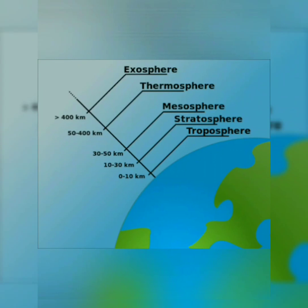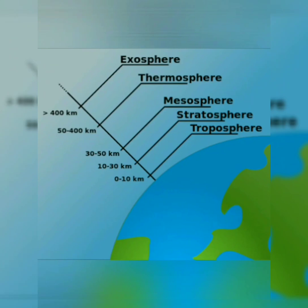Now, the atmospheric gases: first is nitrogen. Nitrogen helps all living things to grow. With the presence of nitrogen on the Earth's surface, the nitrogen cycle continuously happens, and through this nitrogen cycle, living things obtain nitrogen and can grow their cells.